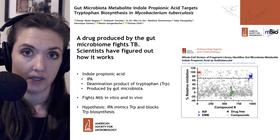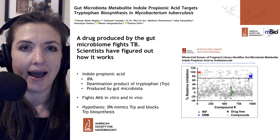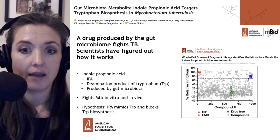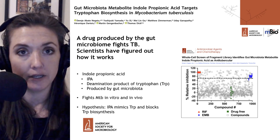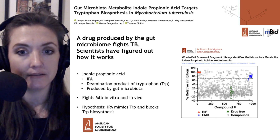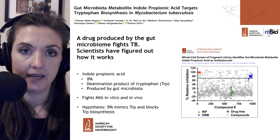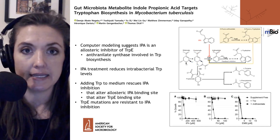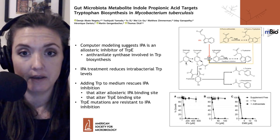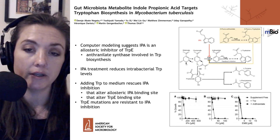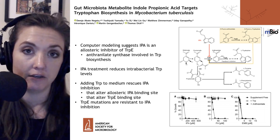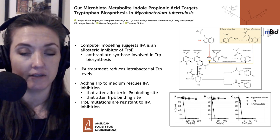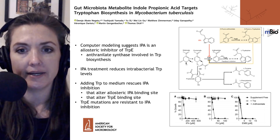In this mBio study, the authors want to look at how IPA fights TB infection. Their hypothesis is that because of its similarity to tryptophan, it blocks tryptophan biosynthesis. They did a number of different studies to test this hypothesis, starting with computer modeling to look at how IPA may interact with different biosynthetic enzymes of the pathway, shown on the right-hand side.